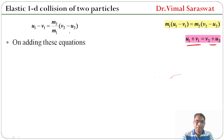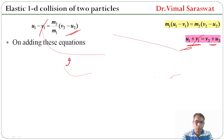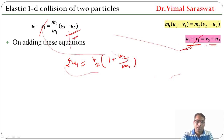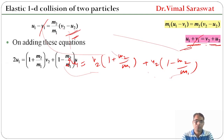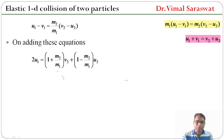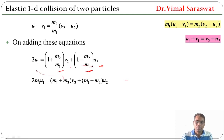On adding these two equations, V1 terms cancel out. So 2U1 equals, on the right-hand side, (M2/M1)·V2 + V2, and minus (M2/M1)·U2. Taking V2 common gives V2(1 + M2/M1) and minus (M2/M1)·U2. Taking M1 as LCM gives 2M1·U1 = (M1 + M2)·V2 + (M1 − M2)·U2.